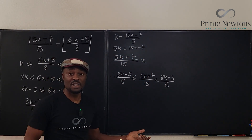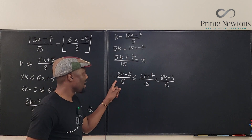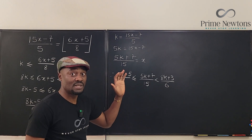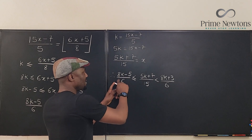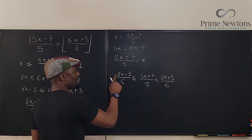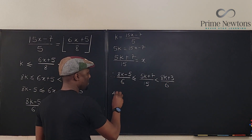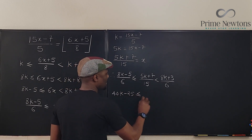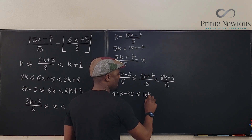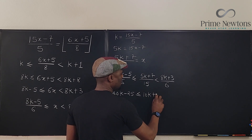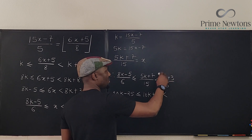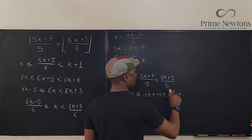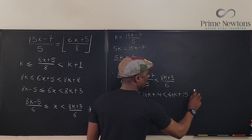Before we move on, let's clear these fractions by multiplying every part by 30. We end up with: 40k − 25 ≤ 10k + 14 < 40k + 15.